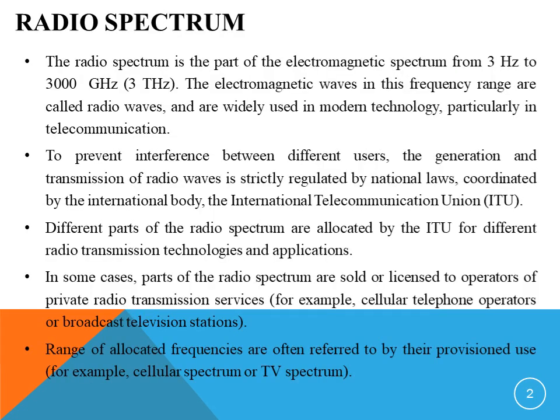First, we will look at what is radio spectrum. The electromagnetic waves in the frequency range from 3 hertz to 3000 gigahertz are called radio waves. They are widely used in many advanced technologies, particularly in telecommunication applications. To prevent interference between different users, the generation and transmission of radio waves is strictly regulated by the International Telecommunication Union.